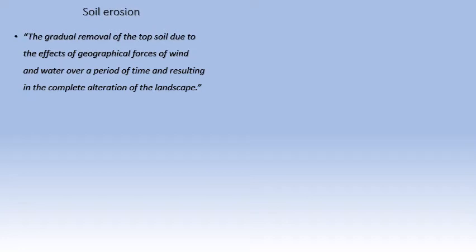As I always tell you, you can rewrite the definition because this is my understanding of soil erosion. If your understanding is aligned with this, if you want to improve or add on some words, please do that, but make sure the meaning does not change. It's a gradual removal of the topsoil due to the effects of geographical forces of wind and water over a period of time. So it's not suddenly happening — it takes time. It results in the complete alteration of the landscape. So if it's slow or gradual, then it's soil erosion.